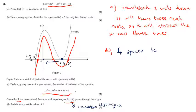And then a translation of four spaces to the left is represented by f of x plus 4. So k could be 4.